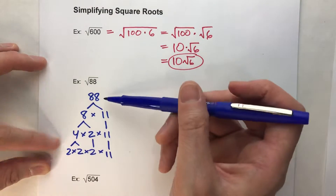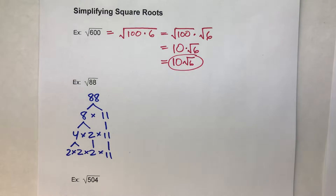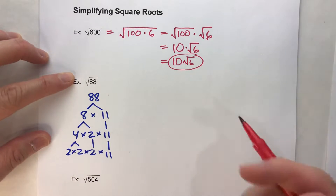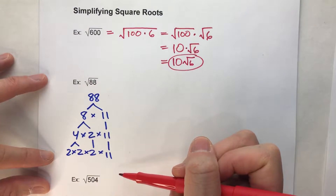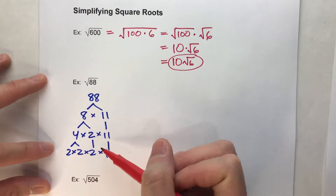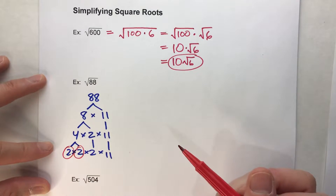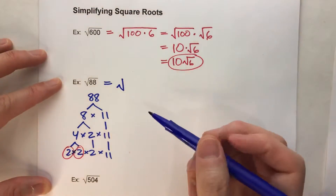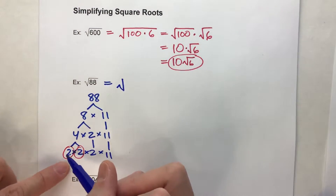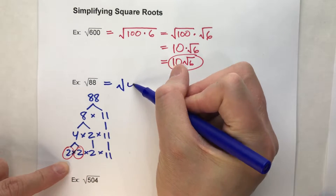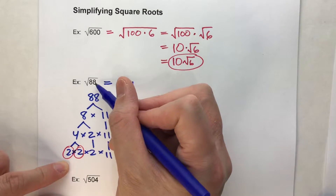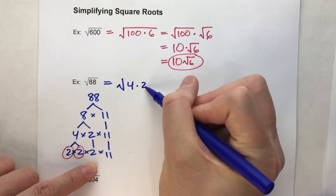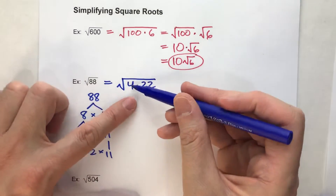2 times 2 times 2 times 11 gives me 88. Why is this helpful? Because if I'm looking for the biggest perfect square that goes into 88, what I do is look at my prime factors and find the pairs. There's a pair of 2s right here. So I can break 88 down into 2 numbers multiplied together, where if I multiply the pairs together — 2 times 2 in this case — that's 4, the biggest perfect square that goes into 88. And if I multiply the leftovers, 2 times 11, that's 22 — the rest of the number that multiplies to get 88.